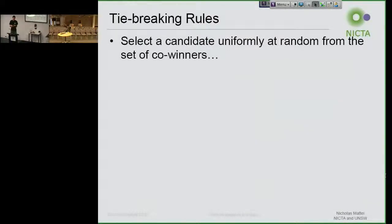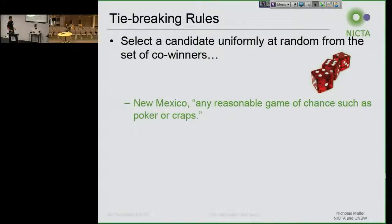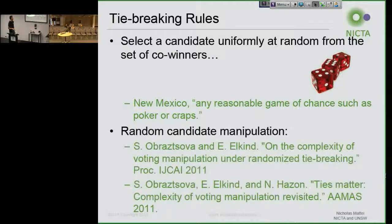Tie-breaking rules that regularly get used in practice include: having an arbitrarily set order over candidates and picking the lexicographically least candidate in case of a tie, or the tallest candidate — my favorite — or as they do in France, the oldest candidate wins. These rules actually get set down, and there are many examples of their use. This also gets used in sports — the first tiebreaker is goals scored away. These are deterministic tie-breaking methodologies. Another approach is random candidate — we have a set of co-winners and we uniformly at random pick one, figuring all co-winners are equally distinguished.